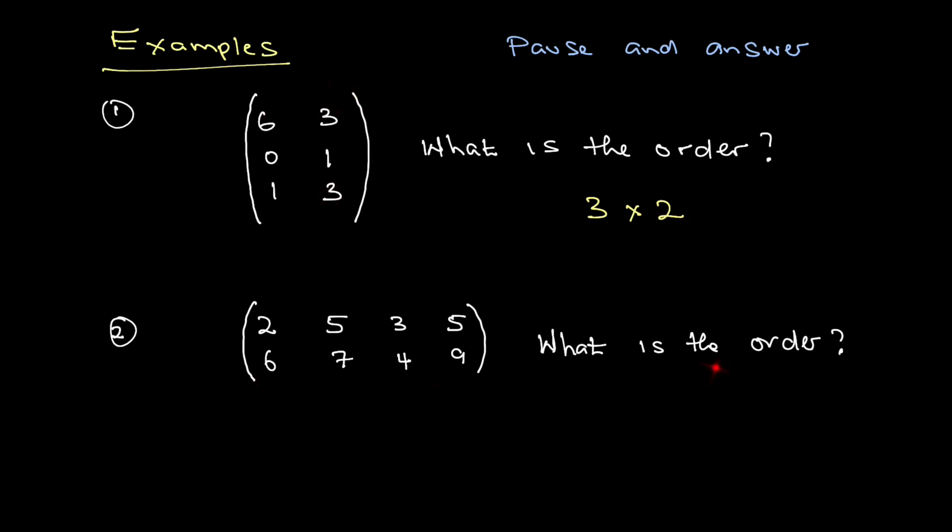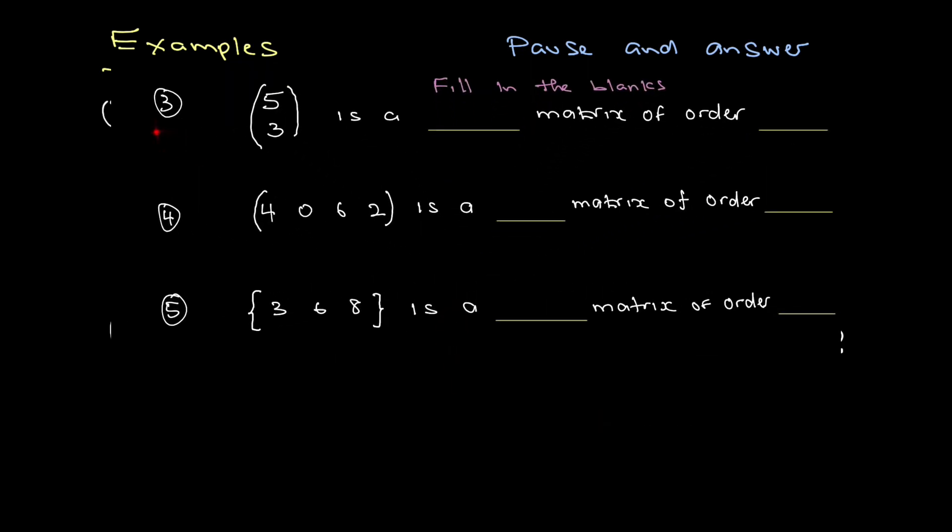What is the order of this matrix? The order is two by four - two rows, four columns.